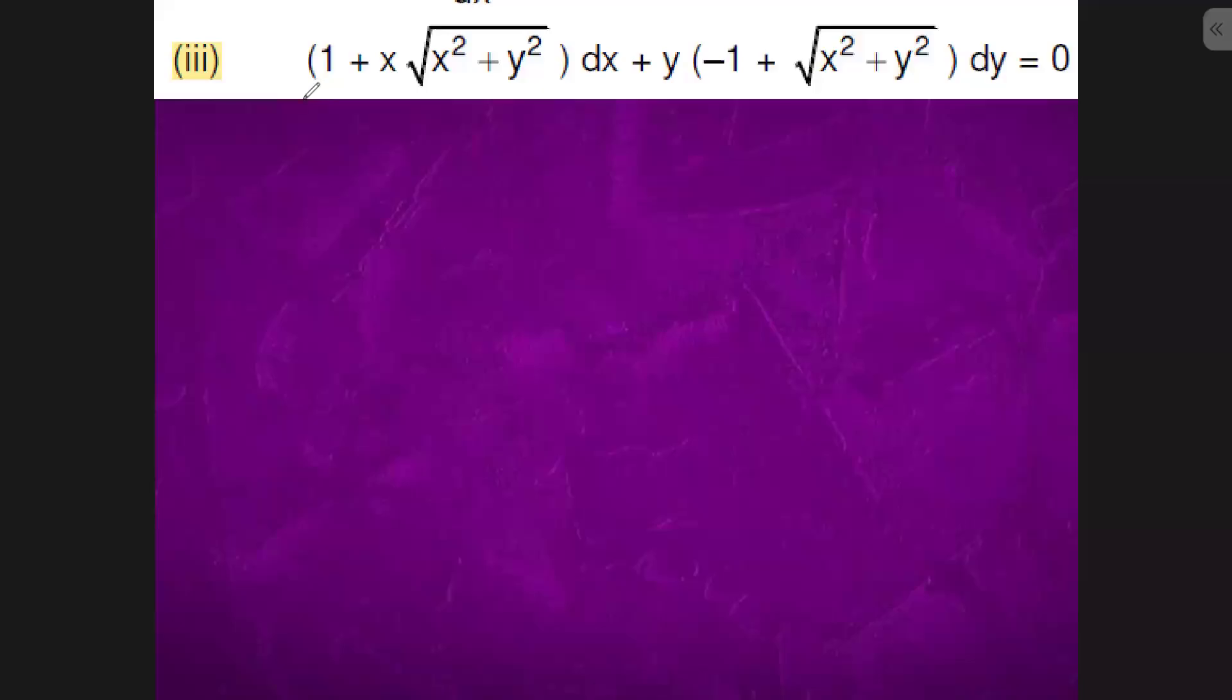In this question, if we consider this to be M and this to be N, we have M dx plus N dy equals to zero. If it is so, we will check dm/dy.